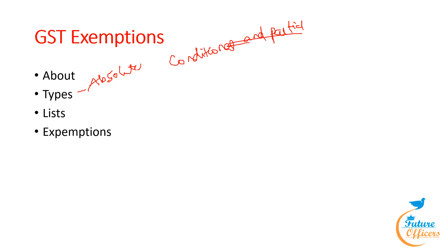GST exemptions mean supplies that do not attract goods and services tax. On such supplies, no GST is charged, and input tax credits paid on these supplies cannot be used. There are also exemptions from registration, and exemptions applicable in business goods and services as described. That's all from the topic of GST exceptions.